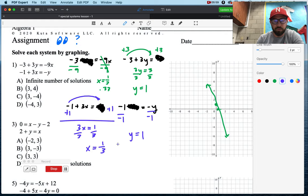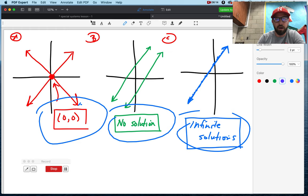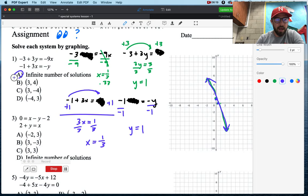Oh, man, that looks familiar, doesn't it? x equals 1/3, right there. y equals 1, right there. And it looks like we have the same line. And if we have the same line, we come over here, and that's infinite number of solutions. So, for this one, our answer would be A.